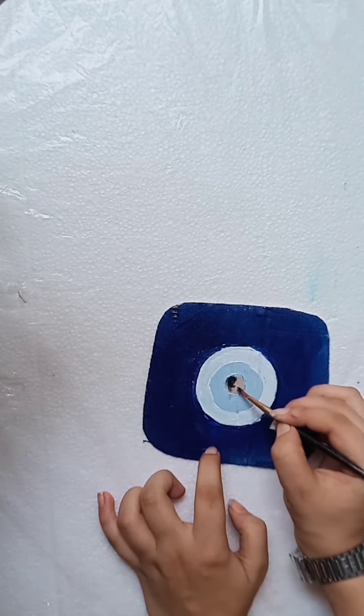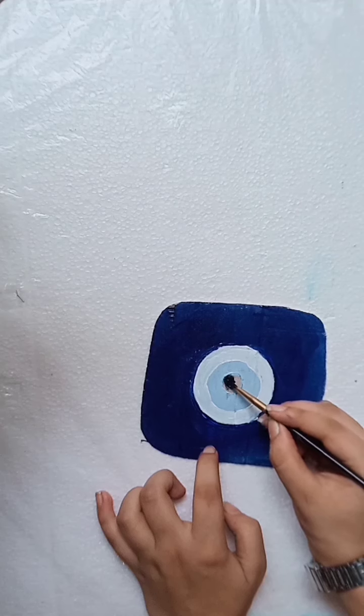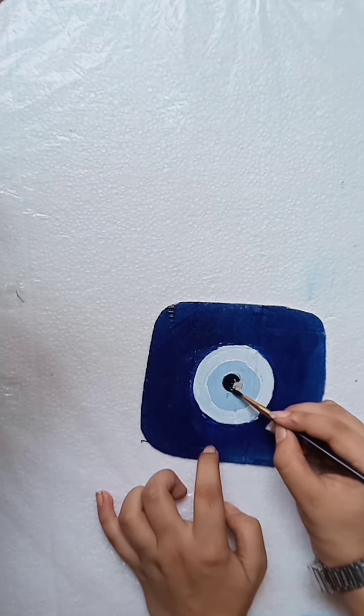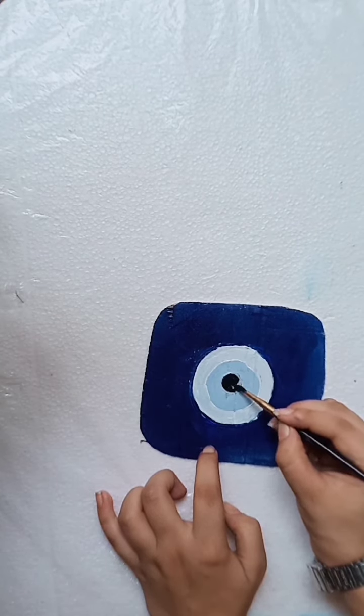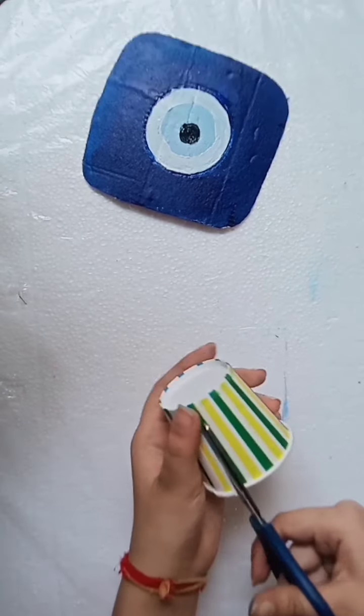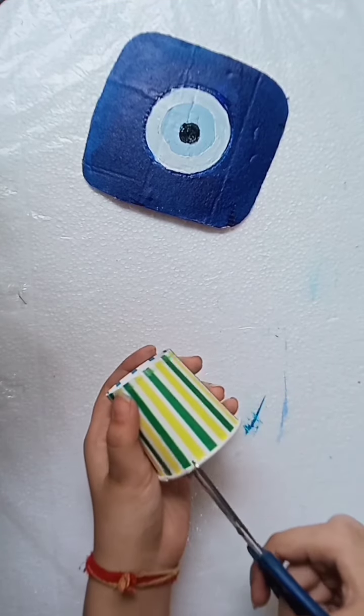After applying the black color in the middle, we'll work with a disposable cup. Apply white paint to it and cut it like this.